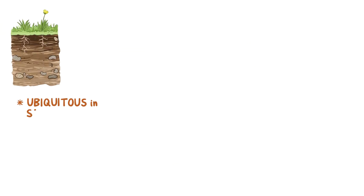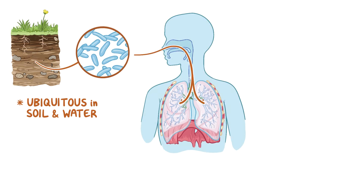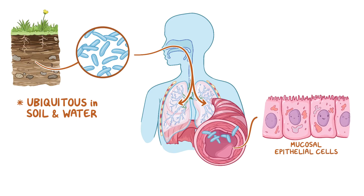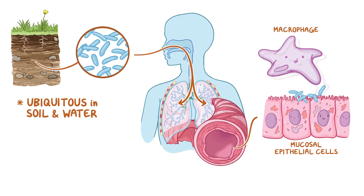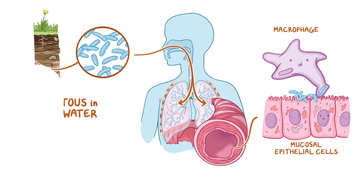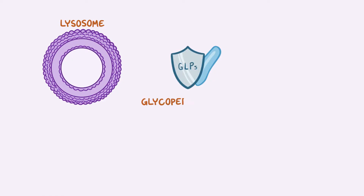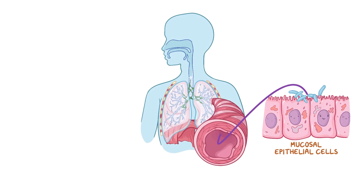MAC are ubiquitous in soil and water, and they're thought to enter the body through inhalation. Once inside the body, they adhere to mucosal epithelial cells in the respiratory tract and infect the macrophages that try to destroy them. Macrophages try to break down the MAC organisms inside an intracellular organelle called a lysosome, which contains digestive enzymes. However, MAC has unique antigenic lipids called glycopeptolipids, or GLPs, which are found on the surface of the cell and act as a protective barrier against lysosomal enzymes, allowing the bacteria to survive and multiply inside macrophages.